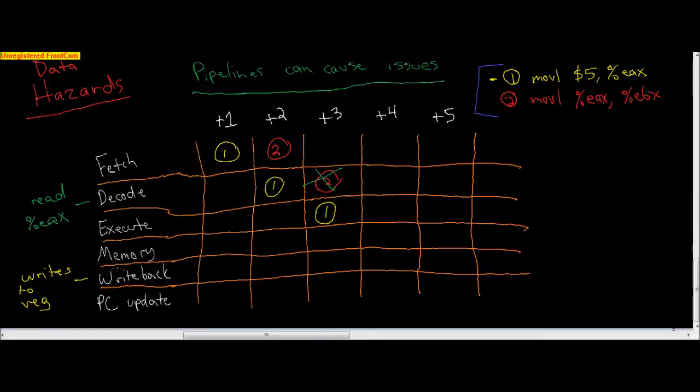So what we do is we have to delay. We hold the two there and continue executing the first one through memory and write back. Once this thing has completed the write back stage, then we can read the second instruction. Then two can move into decode because five got moved into EAX. Now we can read EAX and pull the five to move it to EBX.